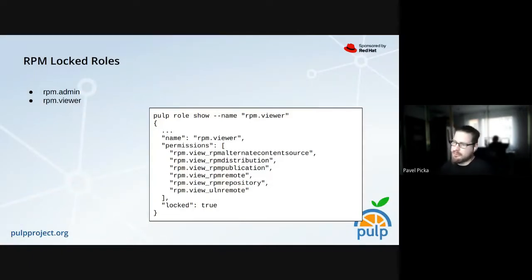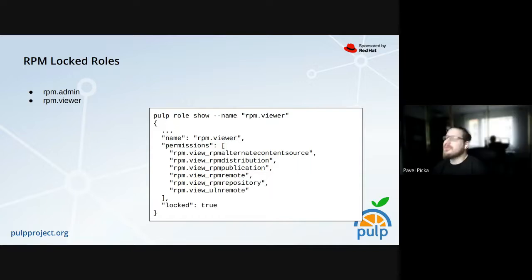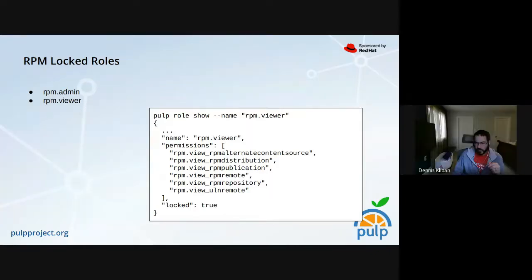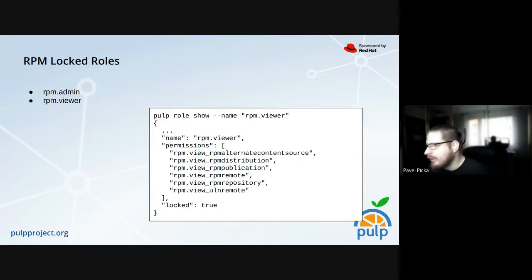These two basic roles are there as a good starting point — one can review everything and one can do everything. It's a starting point to build other roles. In terms of what version of Pulp RPM these are added in — it's not yet released, it will probably be in the next version of RPM. The documentation links to GitHub for now, but if you're using the master branch, documentation is already in place.